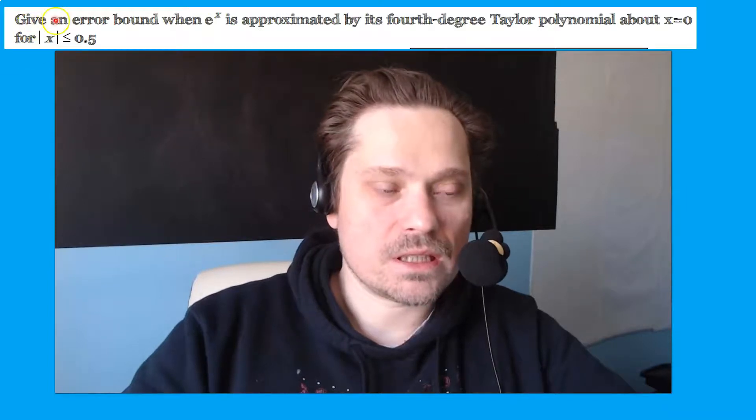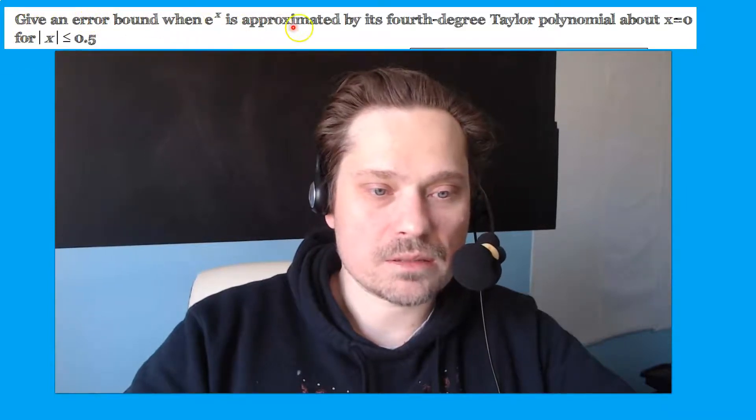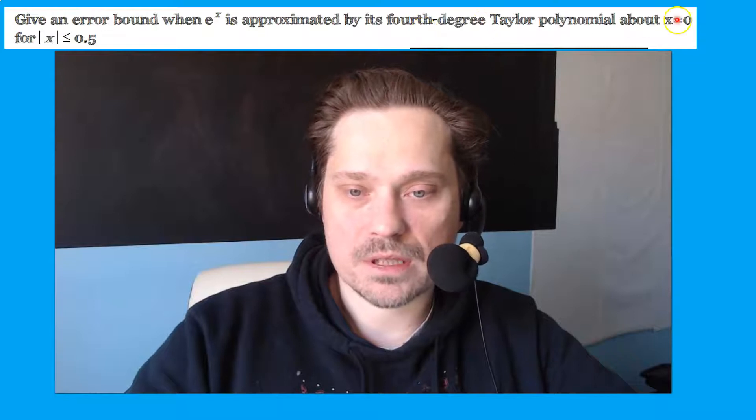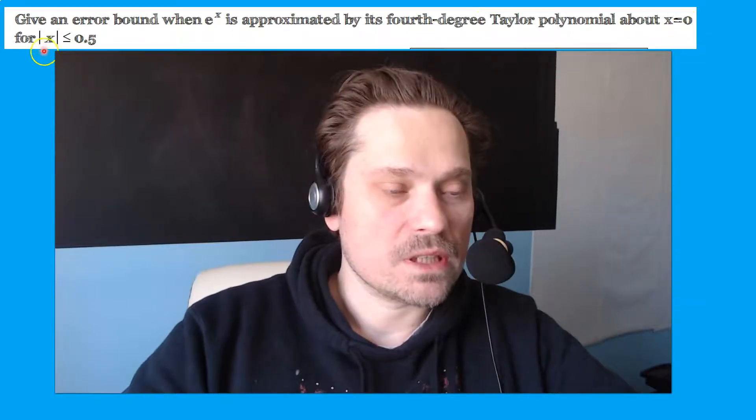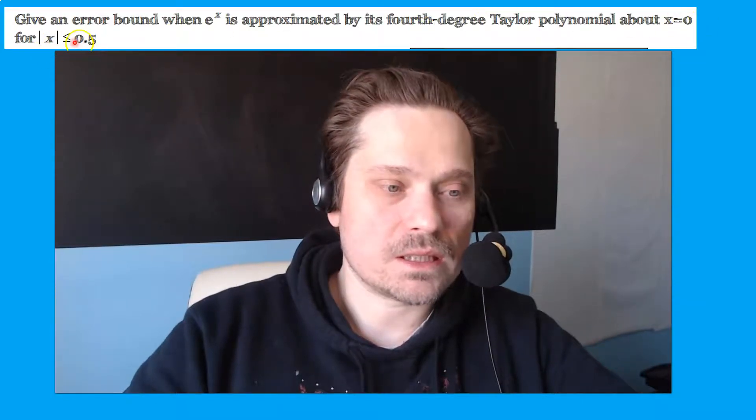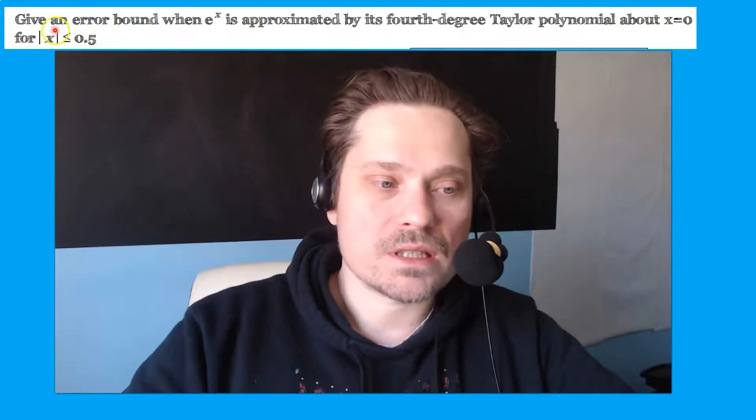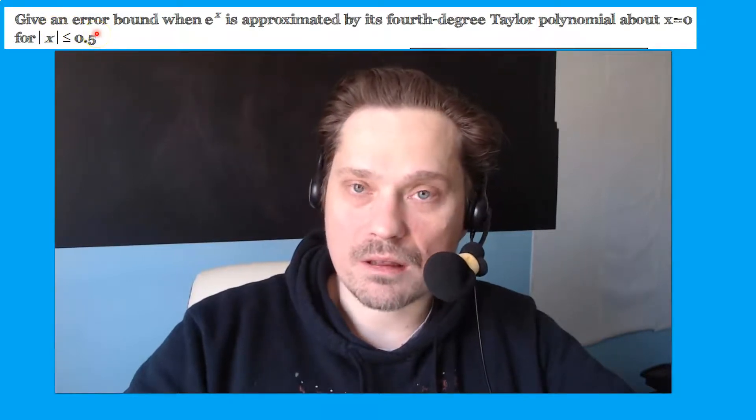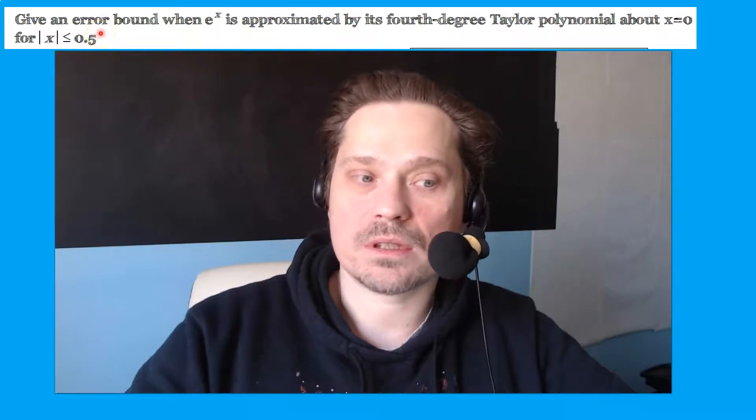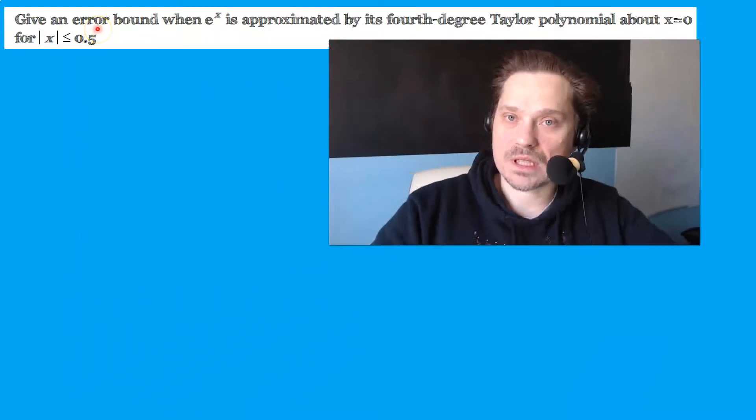Welcome friends, in this one let's give an error bound when e to the x is approximated by its 4th degree Taylor polynomial about x equals 0 for the absolute value of x less than or equal to 0.5. Notice the key phrase, an error bound, not the error bound. Kind of important because it means that there isn't one answer.